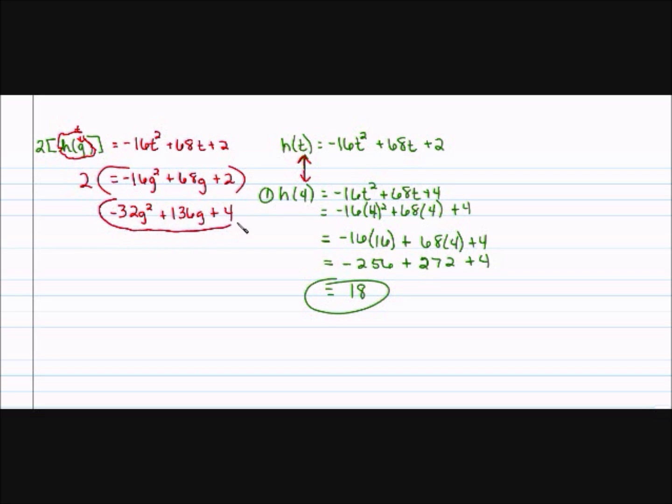The reason you're done is because you cannot simplify it anymore. You have a g squared. Do you have any other g squareds? Nope. You have a g. Do you have any other g's? Nope. And you have your number 4. Do you have any other numbers without variables? Nope. And that's how you know you're done.